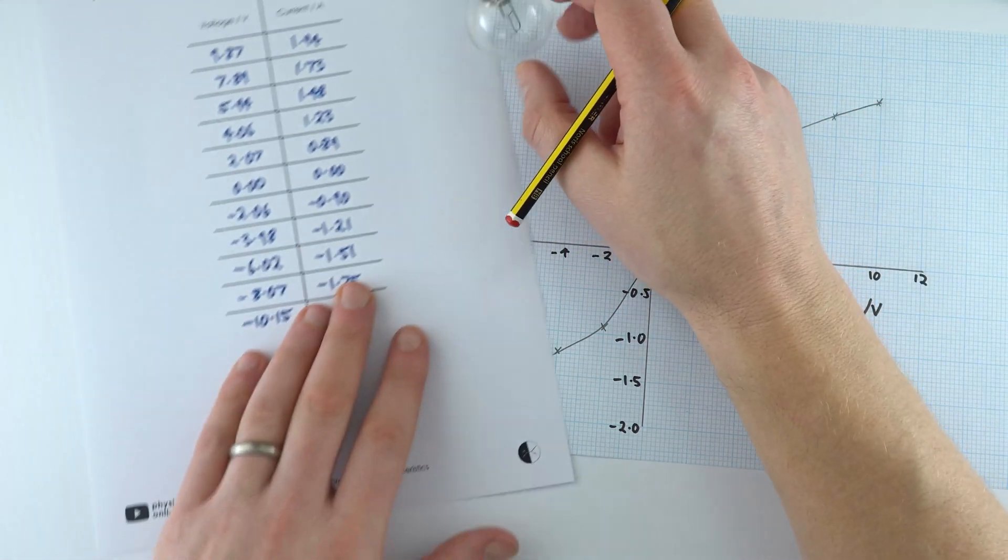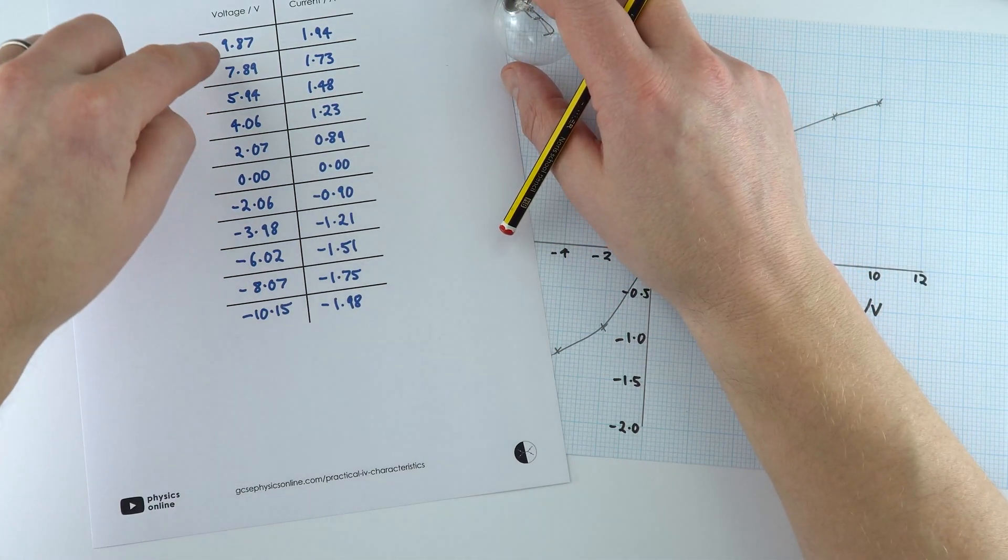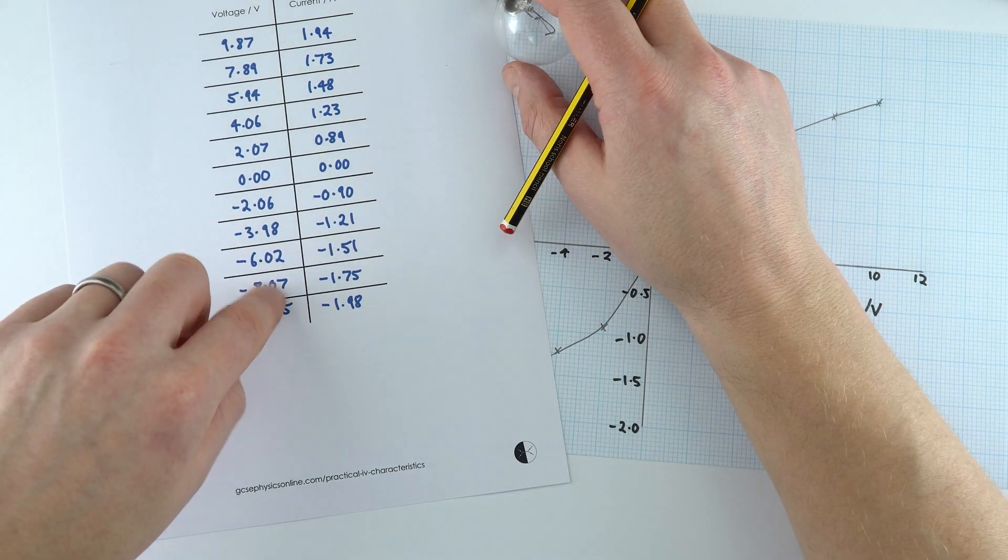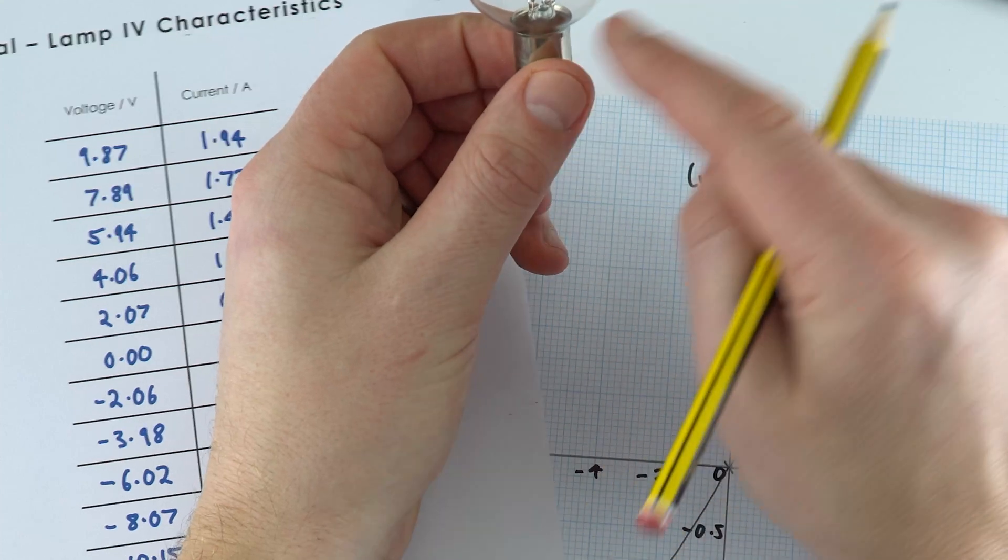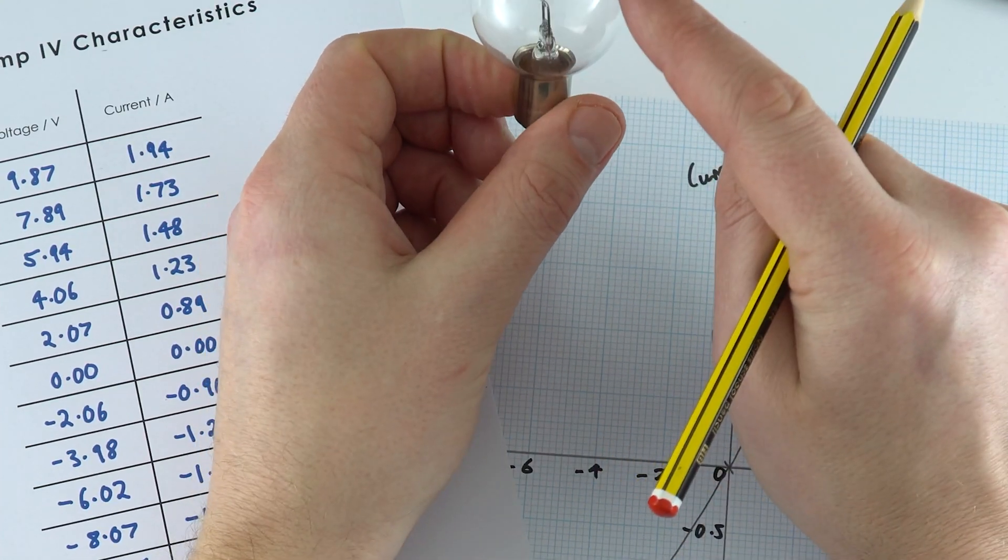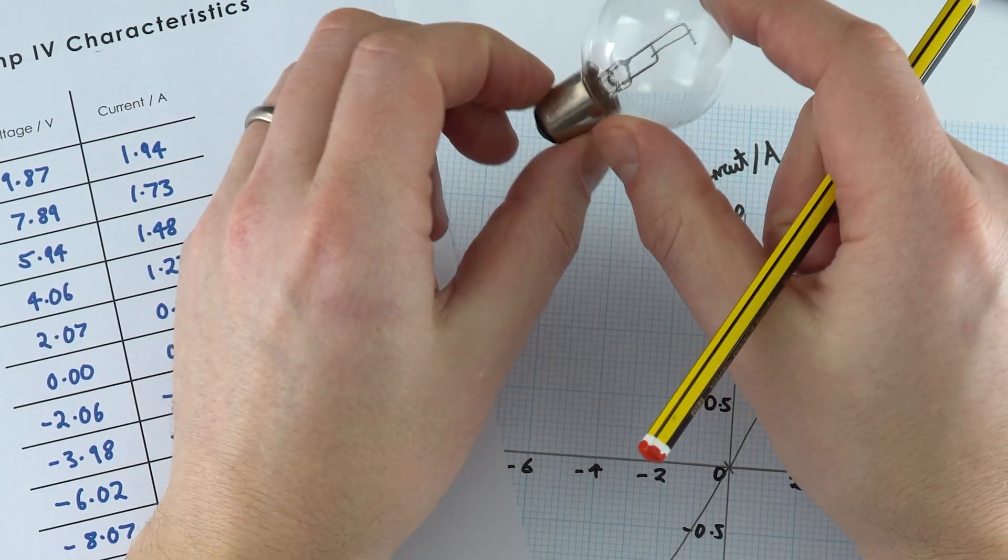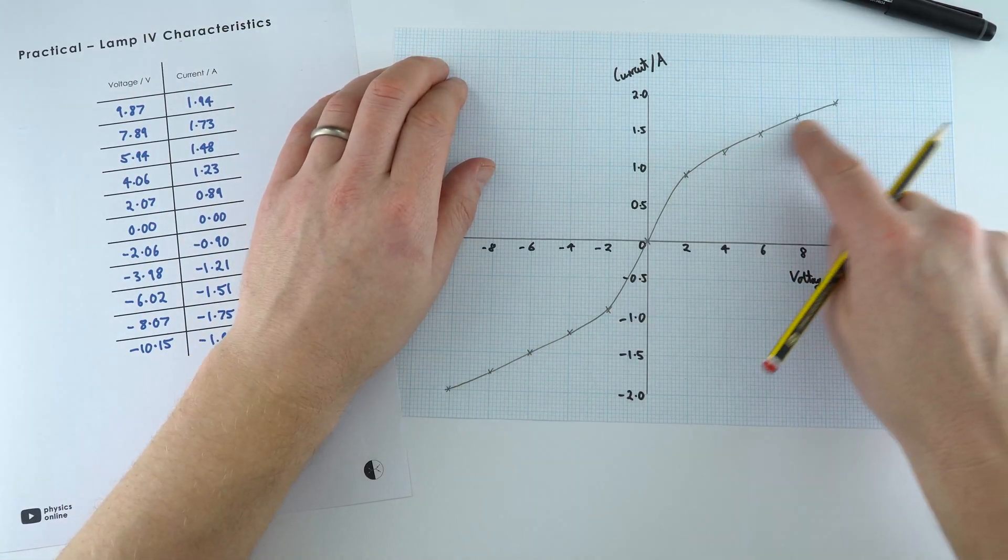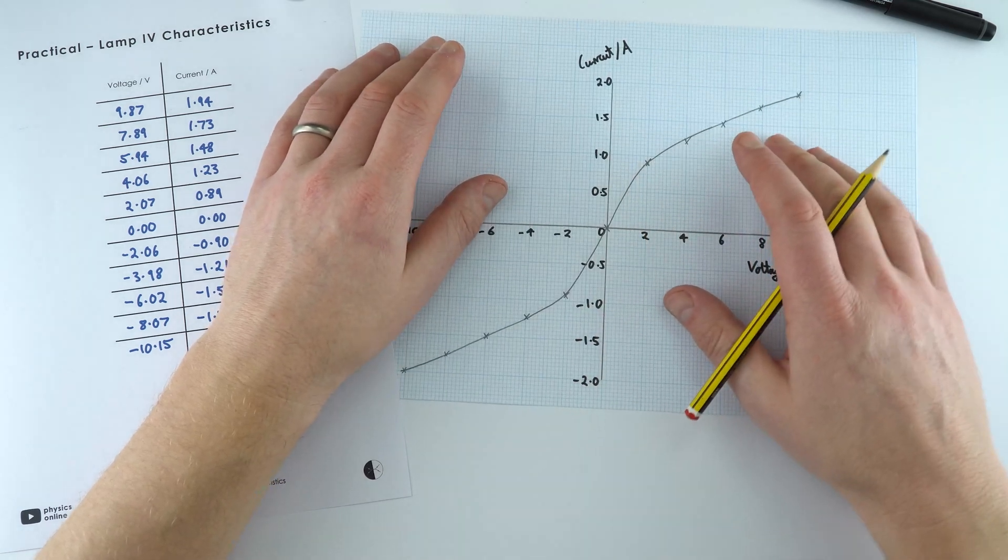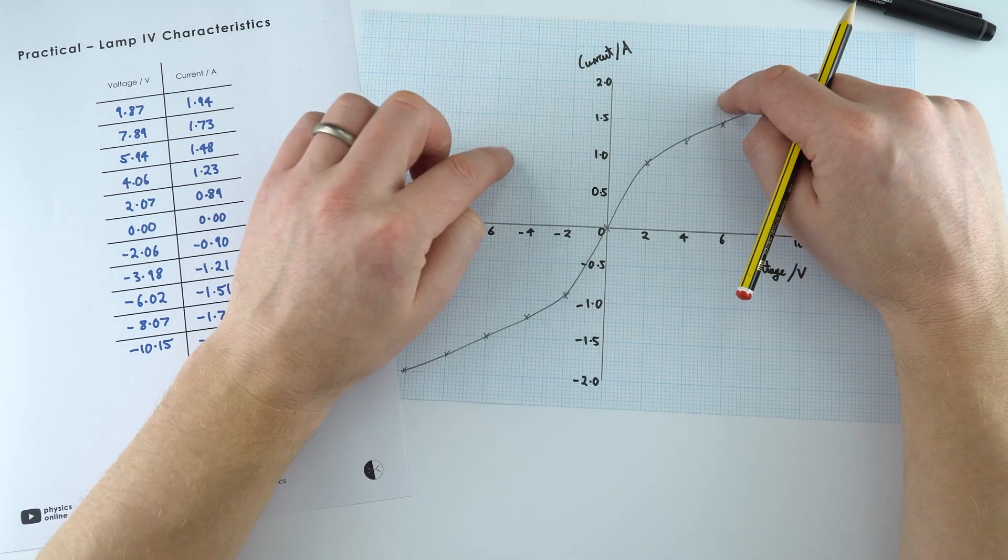And the other thing that you might notice already from the data here is that the positive and negative values are the same just these ones are negative and that means it doesn't matter which way the current is going through this, it's going to behave in exactly the same way if it's either positive or negative. So this S shape curve here is the kind of thing that you'd expect to see for a filament lamp.